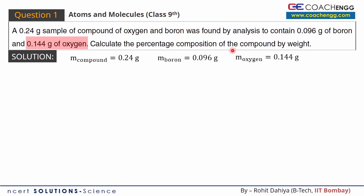And 0.144 grams of oxygen. So oxygen's mass is 0.144. Your sample is 0.24 grams total, with boron being 0.096 grams and oxygen being 0.144 grams. You can add these numbers, 0.096 and 0.144, which equals 0.24 grams.